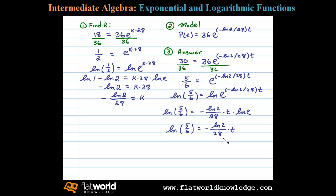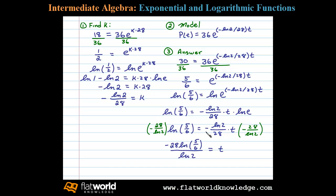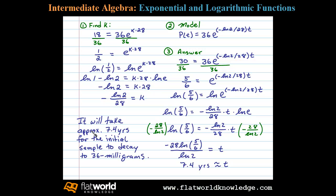Now we can solve by multiplying both sides by the reciprocal of this fraction to get t in one step. On the left side we have negative 28 times the natural log of 5/6 divided by the natural log of 2. On the right side the natural log of 2 and the 28 cancel, and negative times negative leaves us with positive t. This is our exact answer, and on a calculator it rounds to approximately 7.4 years. So it will take approximately 7.4 years for the initial 36 milligram sample to decay to 30 milligrams.